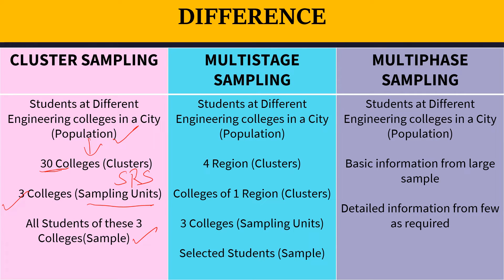If it is not feasible to collect data from all the students of these three colleges, then I need to divide it further and select few students by using simple random sampling again. In that case it becomes multi-stage sampling. But in reality it is not that simple — in multi-stage sampling you need to divide clusters into sub-clusters, and this process goes on until you achieve your desired sample size.